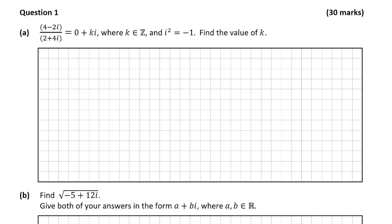This is a complex numbers question worth 30 marks. For part (a) there are a number of different ways to do this question, however a couple of those methods only apply for this particular set of numbers, so I'm going to show you a method that will work for all complex numbers questions of this form. In part (a) we have (4 - 2i) divided by (2 + 4i) is equal to 0 + ki, where k is an integer, i squared is equal to negative 1, and we're being asked to find the value of k.